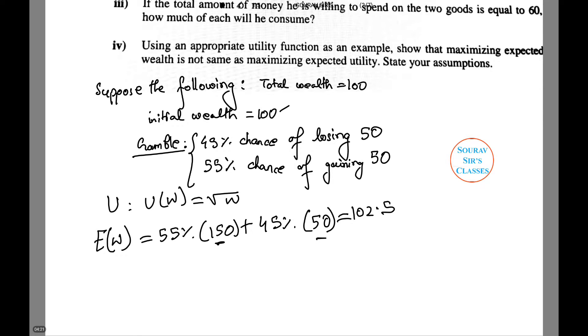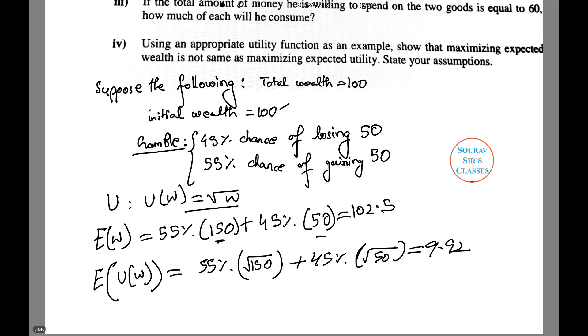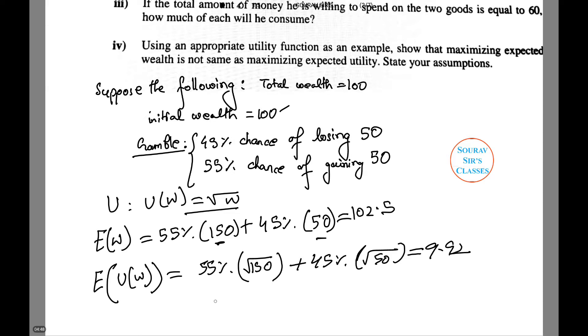Now, however, the expected utility of X is the expected utility of wealth, which equals 55% times square root of 150 - as we put it into the utility function we already defined - plus 45% times square root of 50, which equals 9.92. The initial expected utility of X equals 10.